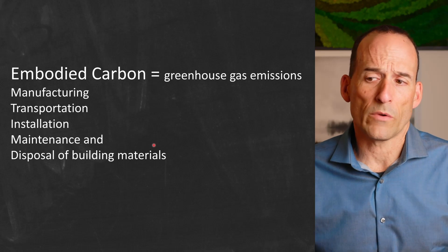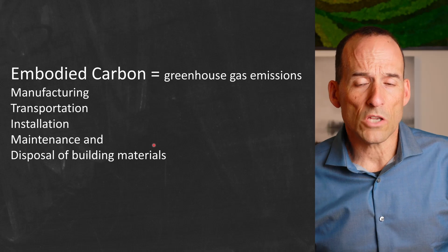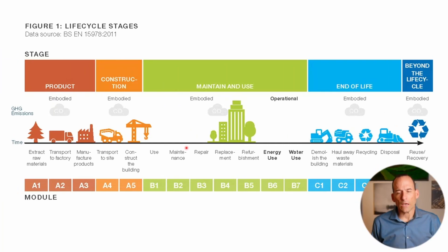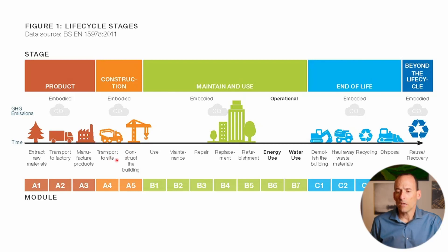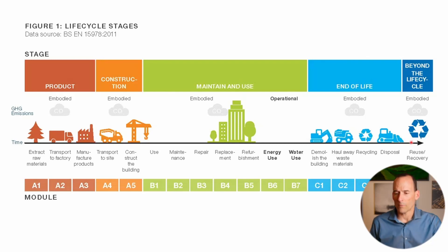The embodied carbon is the greenhouse gas emissions associated with the manufacturing, transportation, installation, maintenance, and disposal of the building materials. Looking at a building's life cycle, the embodied carbon correlates to the extraction, transport, and manufacture of materials, then the construction phase — transport to site and construction of the building. There's a management phase with both an operational carbon portion and an embodied carbon portion. Then we have end-of-life embodied carbon and beyond: the reuse or demolition of that material.